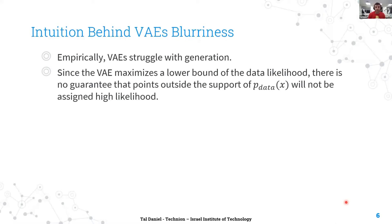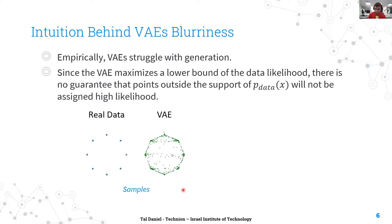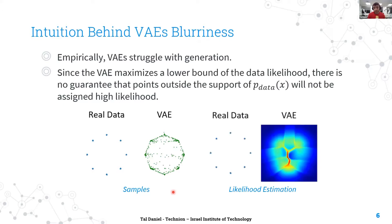It is clear that VAEs struggle with generation. For a simple 2D dataset, the 8 Gaussians dataset, you can see that the VAE learns to generate samples from the modes but also between the modes and in the center — samples that have never been seen before. For images, this is interpreted as blurriness, since the pixels are somewhere between the true pixel distribution. Looking at the likelihood estimation experiment, the VAE assigns most of the probability mass in the center. One explanation is that since VAEs maximize the ELBO and not the actual likelihood, there is no guarantee that points outside the support of the data distribution will not be assigned high likelihood.